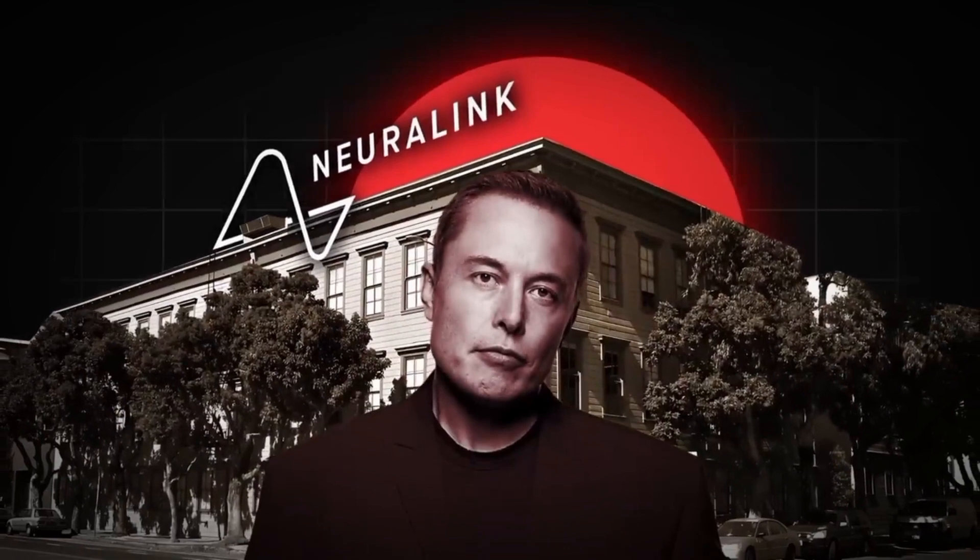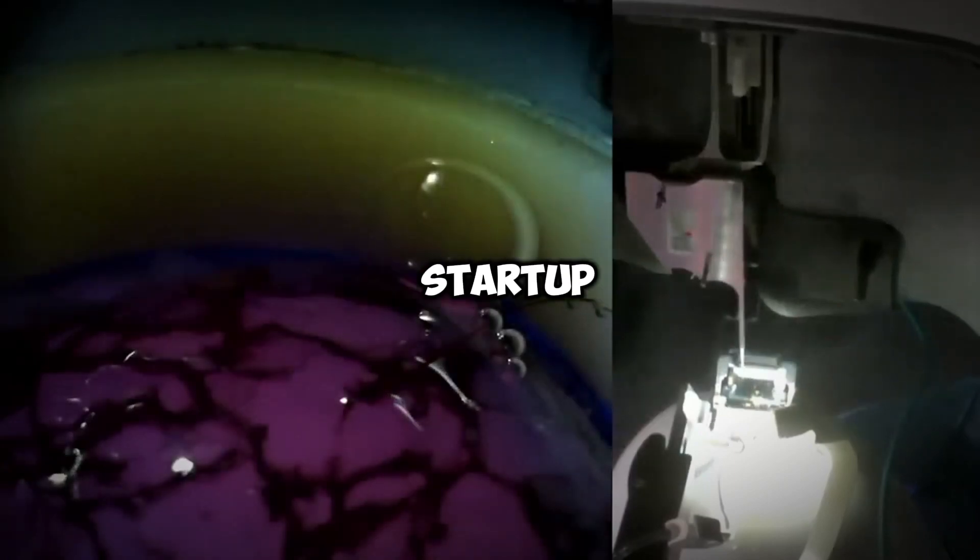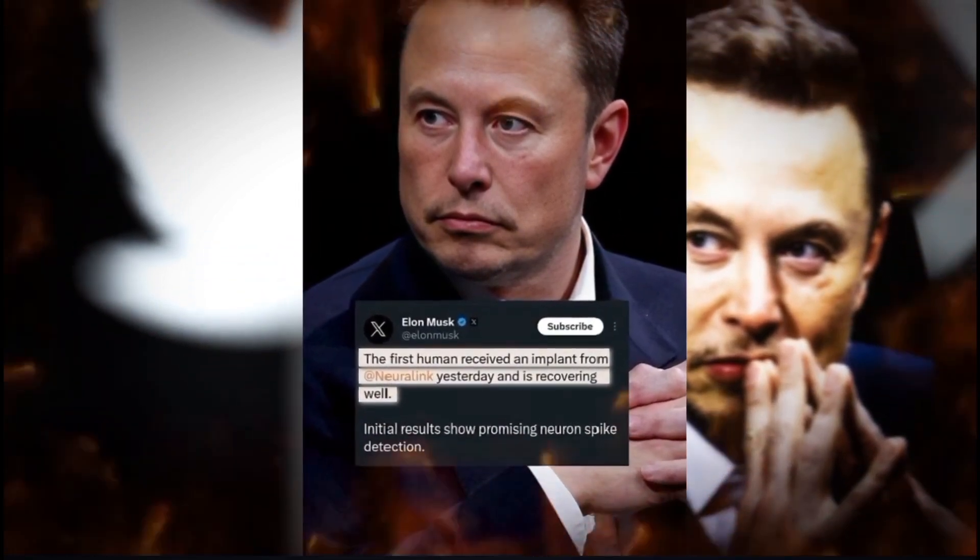Elon Musk stirred headlines again, but not with his characteristic bold comments, but for Neuralink, his brain-computer interface startup. On Tuesday, he announced on social media that Neuralink successfully installed its first brain implant in a paralyzed patient.